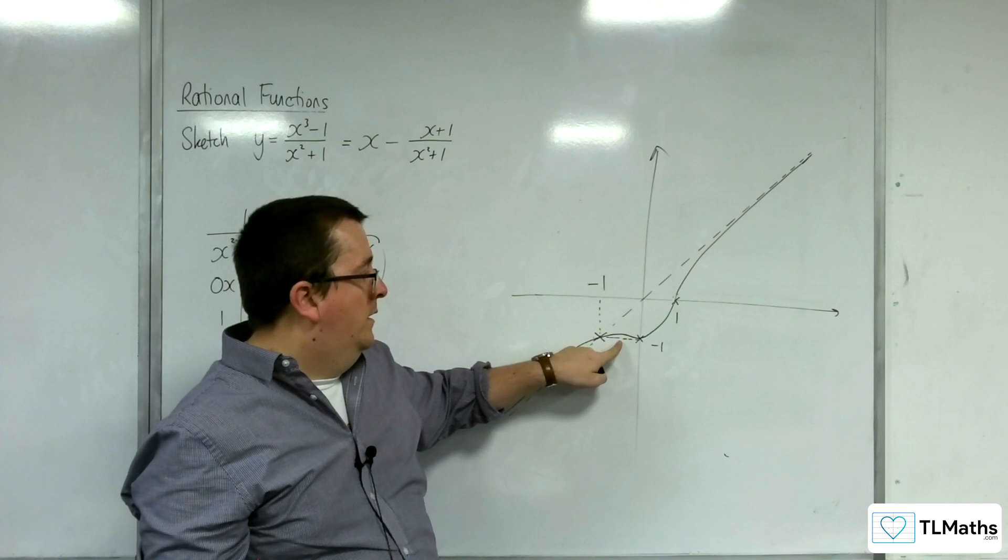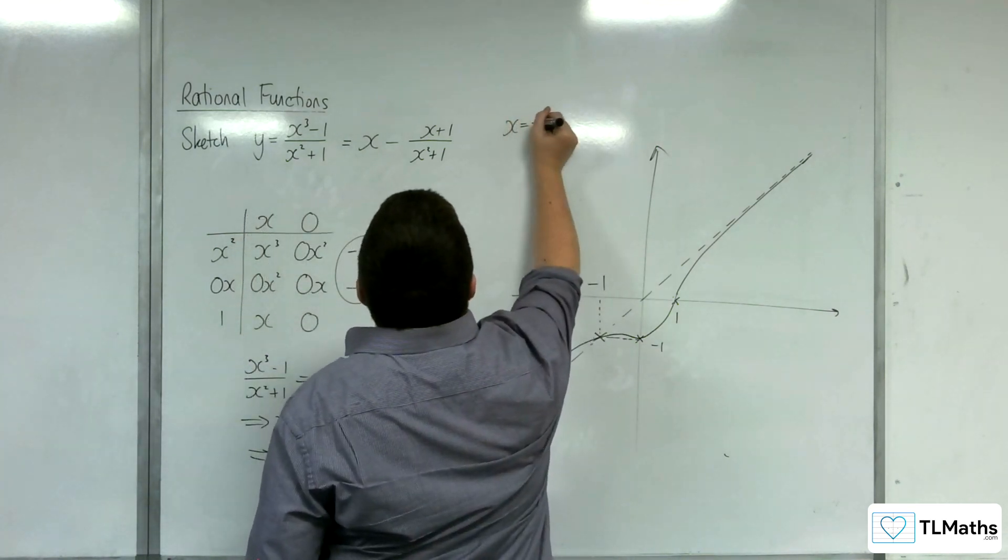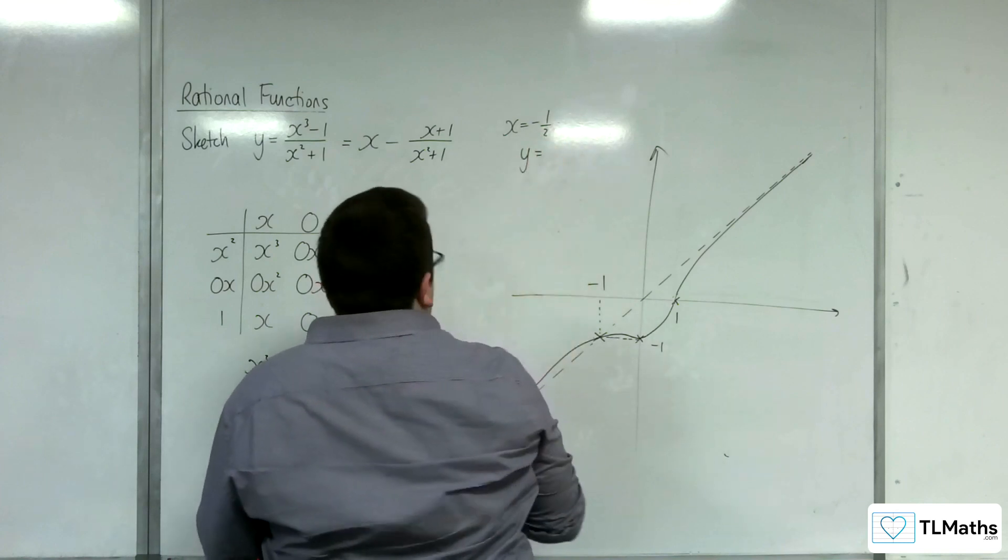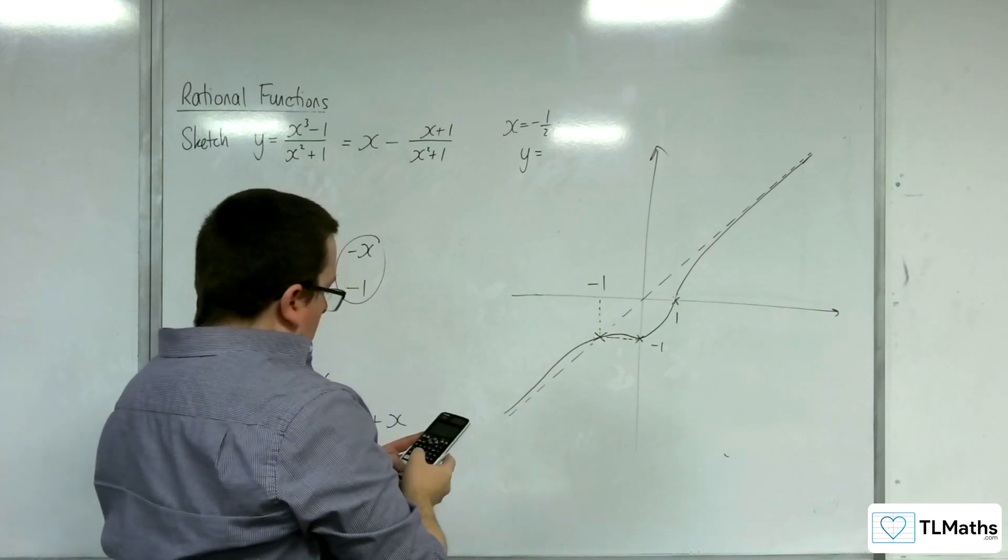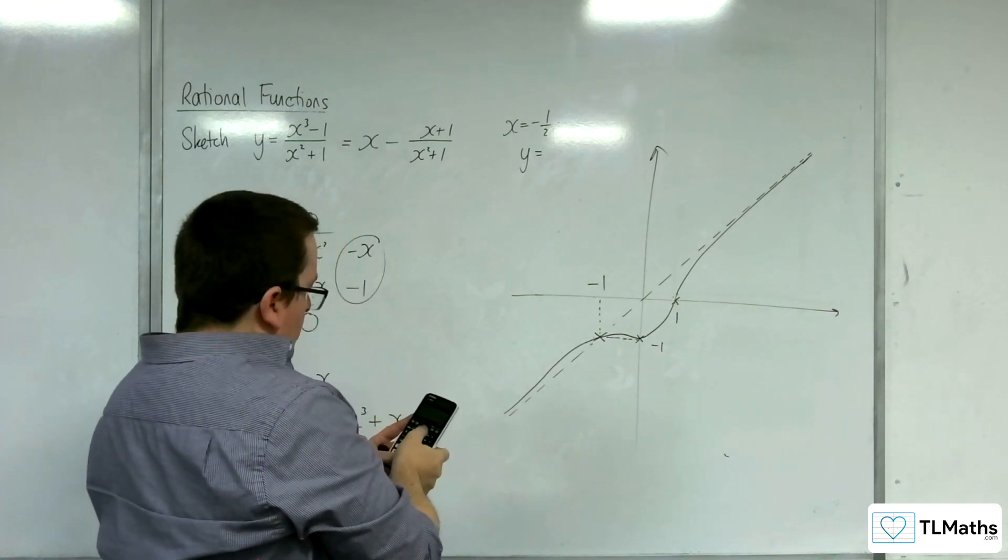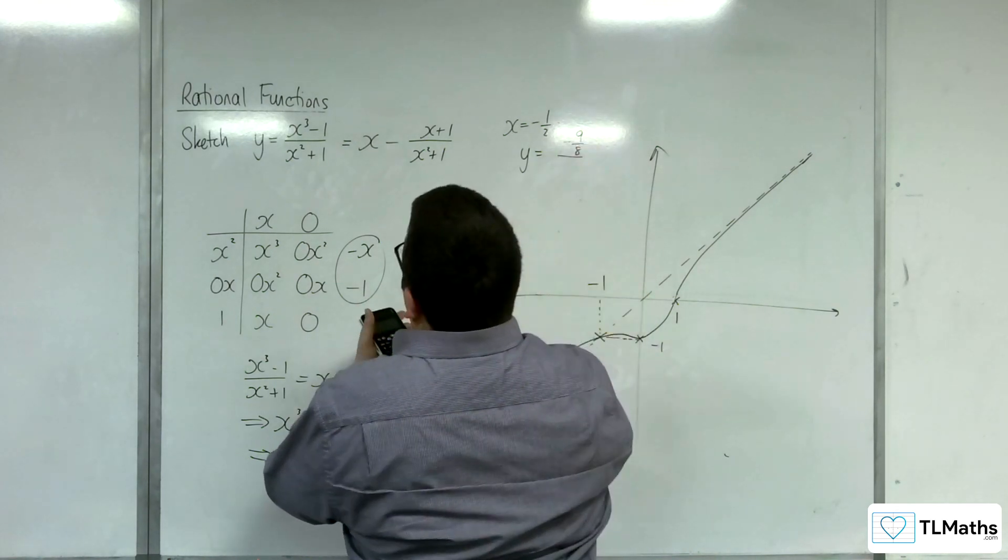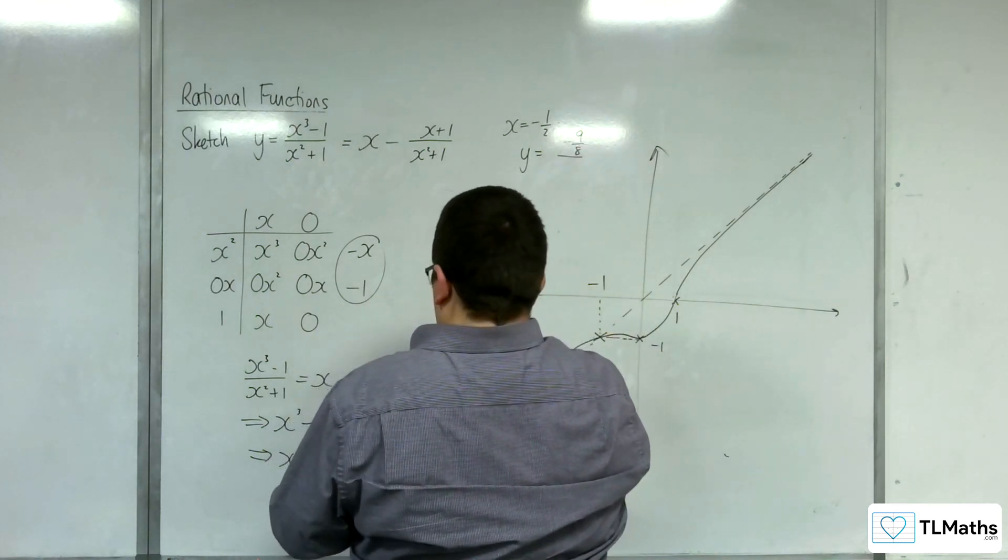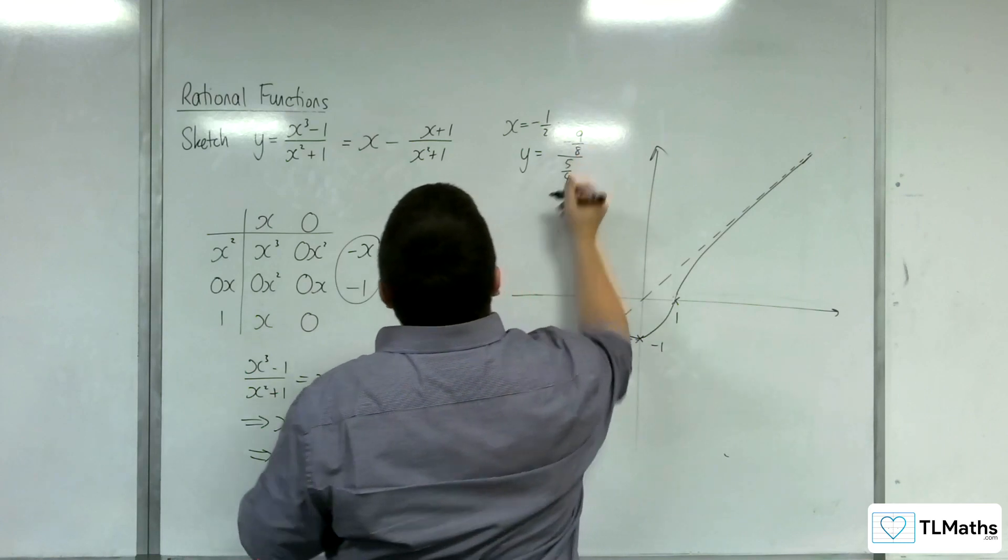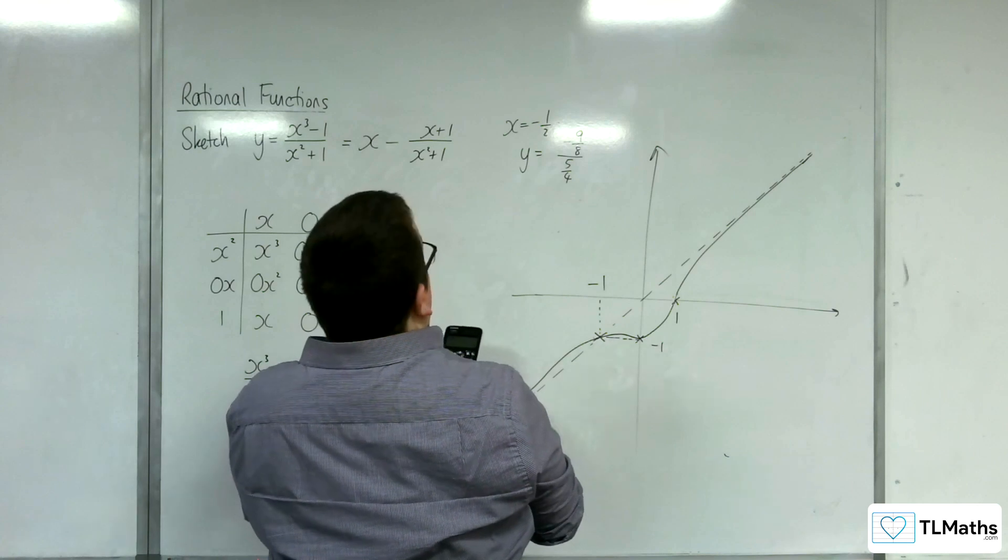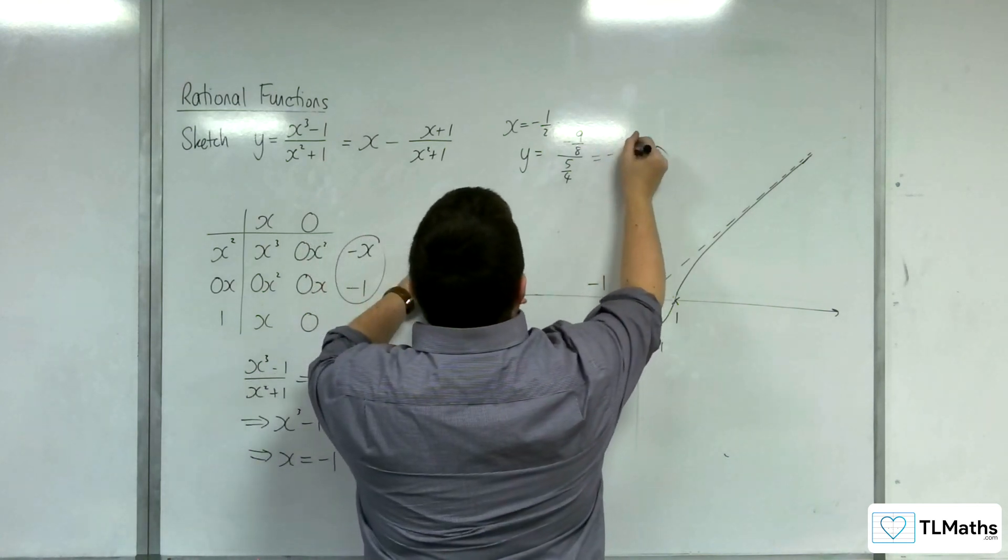Is it above this dotted line, or is it below it? So, let's try x equals minus 1 half, and just see. So, when x is equal to minus 1 half, we're getting minus 1 half cubed, take away 1. So, we get minus 9 eighths in the numerator. And then we get minus 1 half squared, plus 1. So, 5 quarters in the denominator. So, minus 9 eighths, and we're dividing that by 5 quarters. And we get minus 9 tenths.